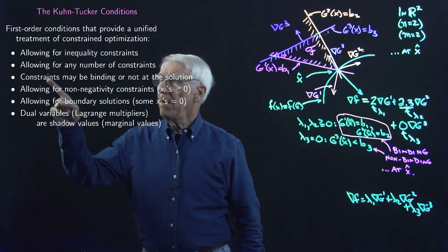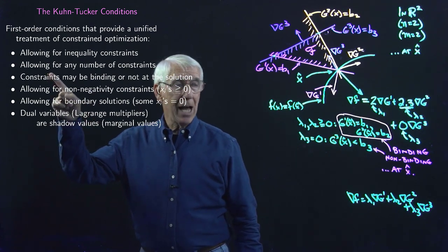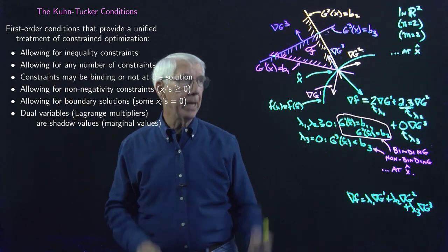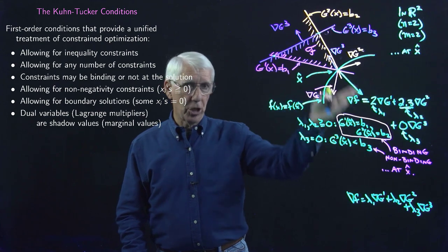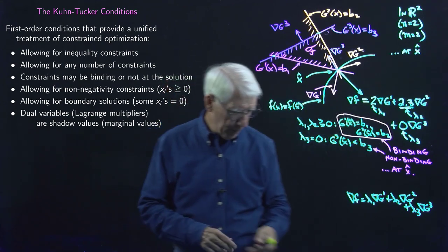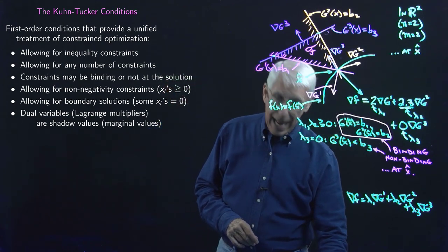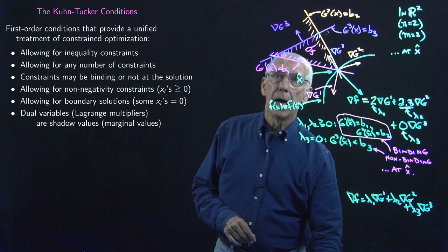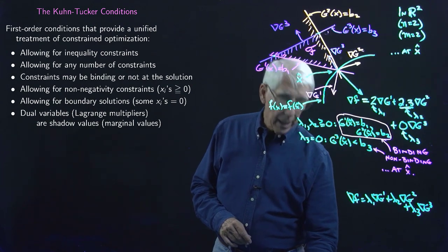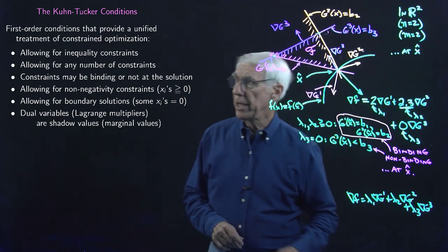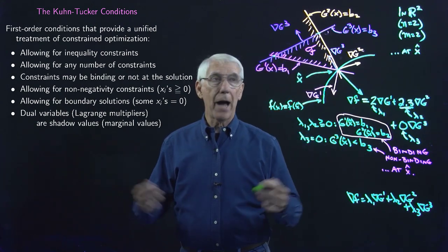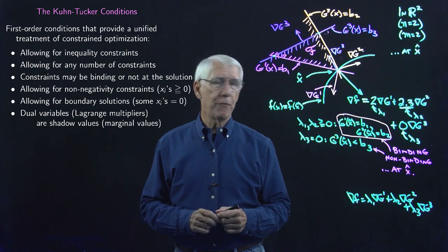It said any number of constraints now — we don't have to have M less than N. That showed up here for sure. And notice that I could now add additional constraints in here, and we would still have a real problem.